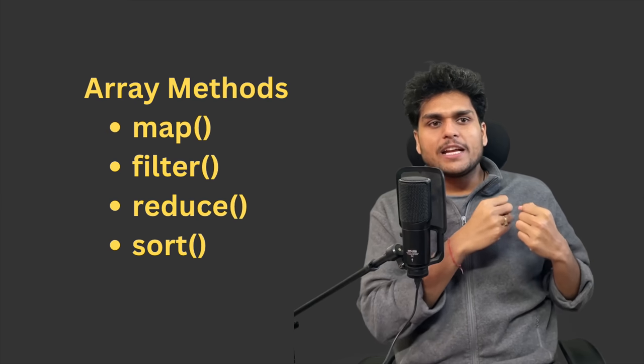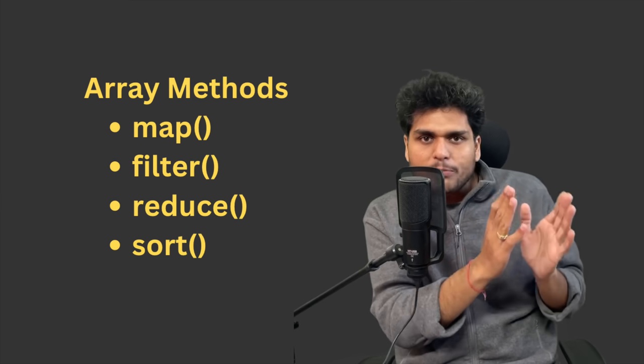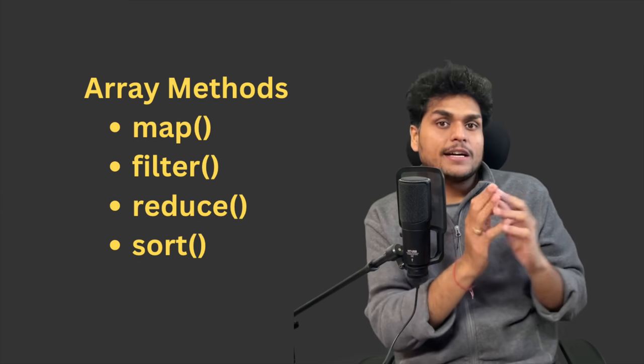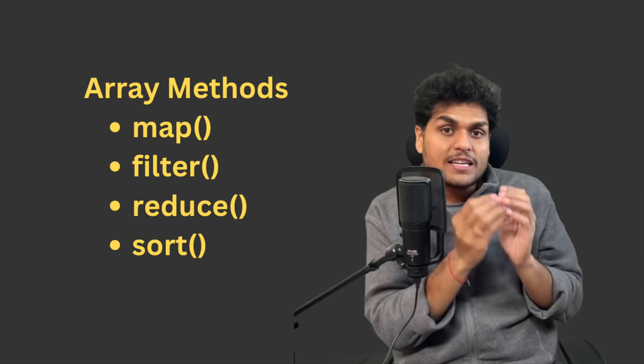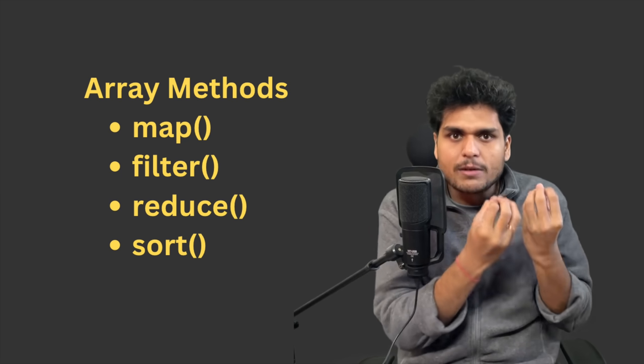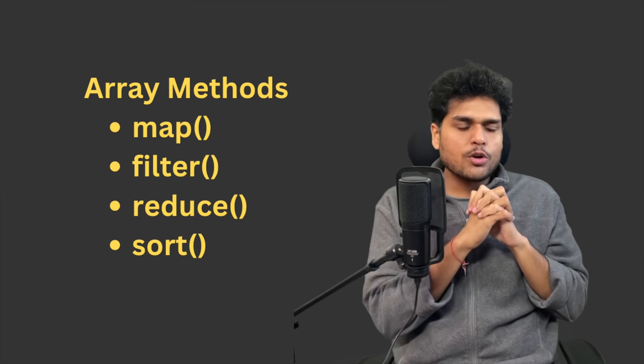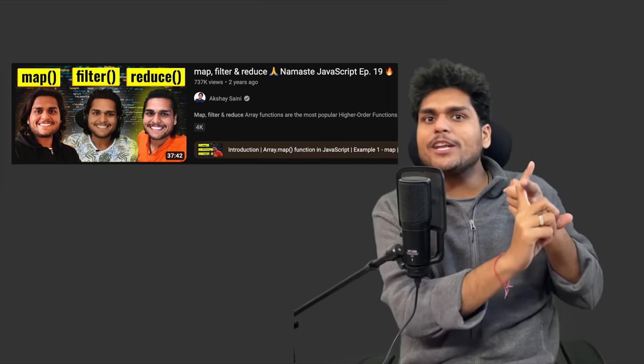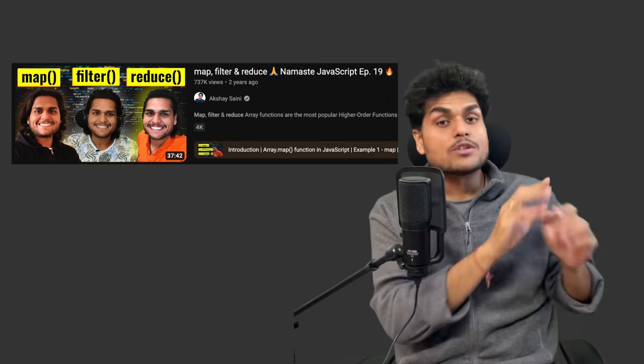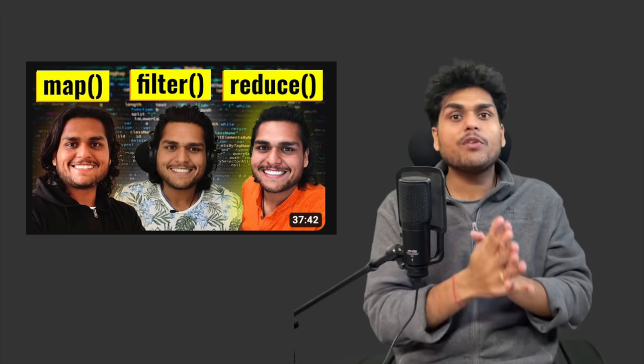The fifth thing you should know is the map, filter, reduce, and sort functions. When you're dealing with arrays and objects, these are the functions JavaScript provides for array operations — you cannot avoid them. Whenever you are writing React, you should be able to write the map function very fluently. I have a video on my channel about map, filter, and reduce — go and watch it before you start learning React.